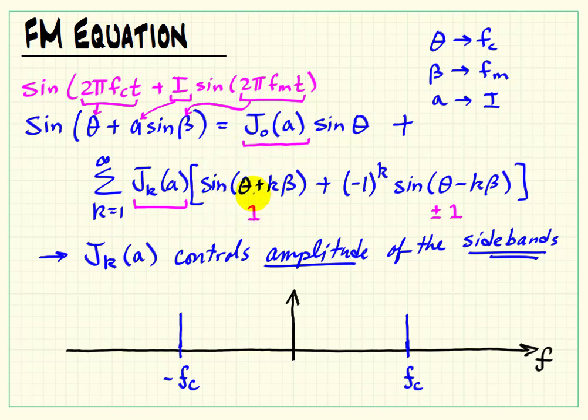Here we have theta, so that's fc, plus k beta. So that would say that we have an integer multiple of our modulation frequency being added to fc.